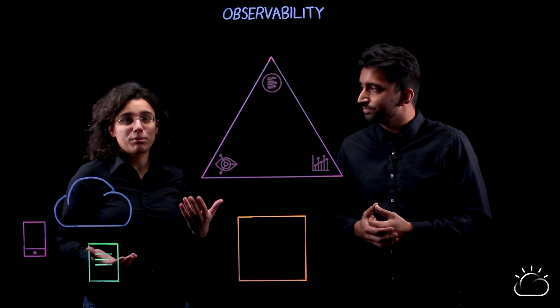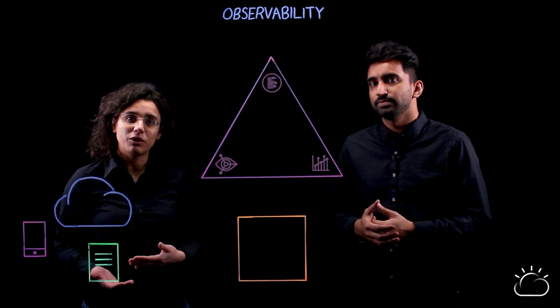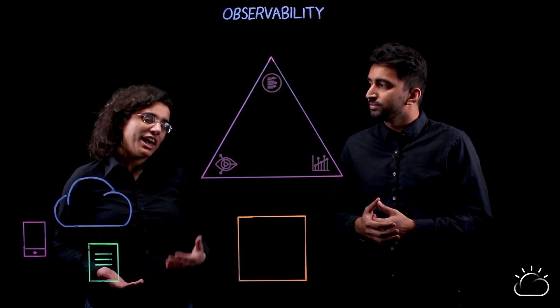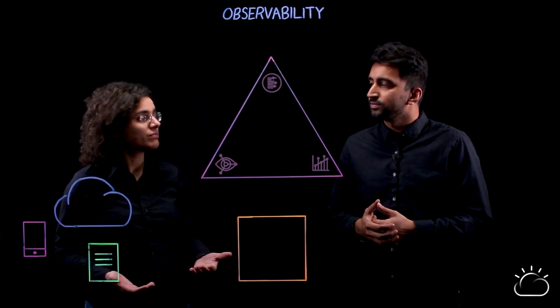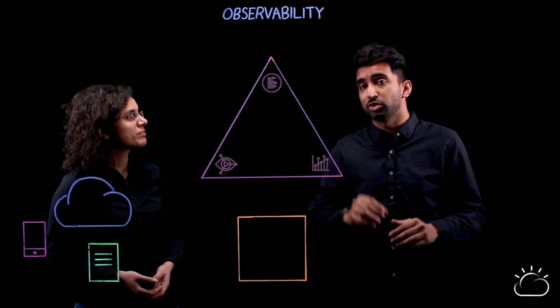So observability is a property of your systems that helps you understand what's going on with them, monitor what they're doing, and be able to get the information you need to troubleshoot. So the way we see it, there's three major tiers of observability. Let's go through those now.